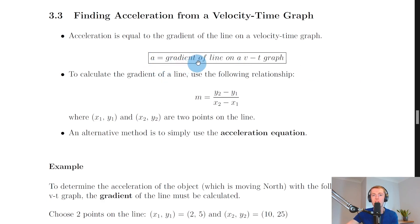To shorten that, we can say that a equals the gradient of line on a v-t graph. You should know how to find the gradient of a straight line from maths. To calculate the gradient of a line, use the following relationship: m equals y2 minus y1 over x2 minus x1, i.e., the change in y over the change in x.